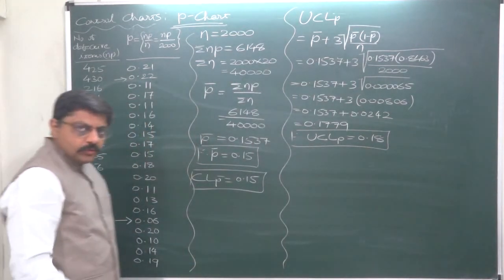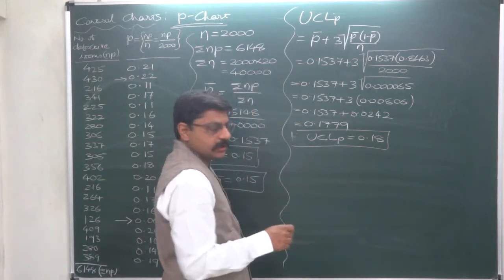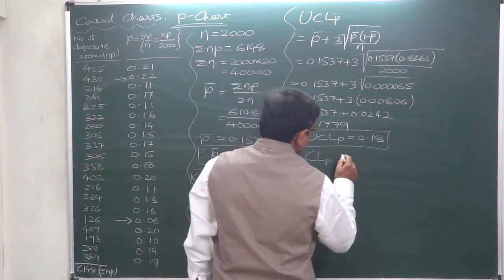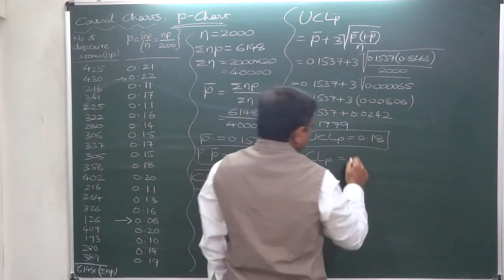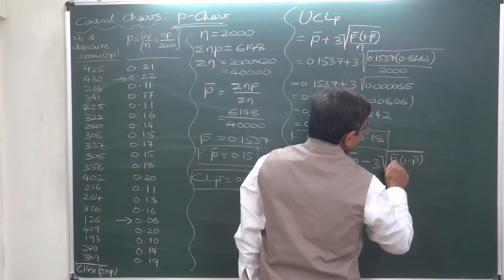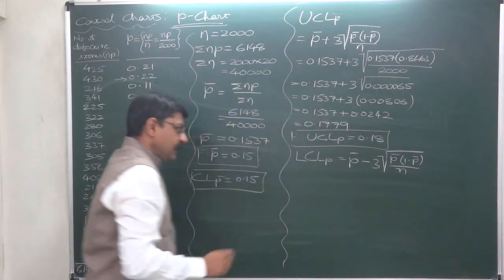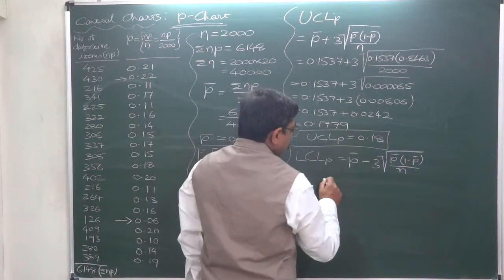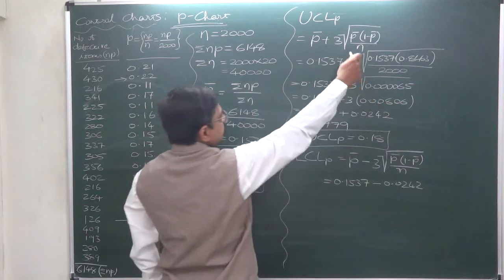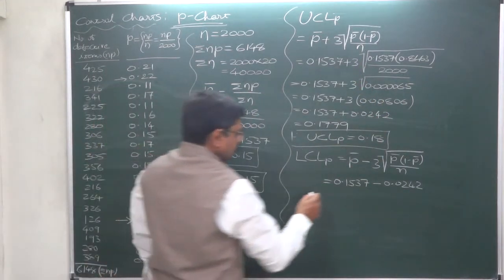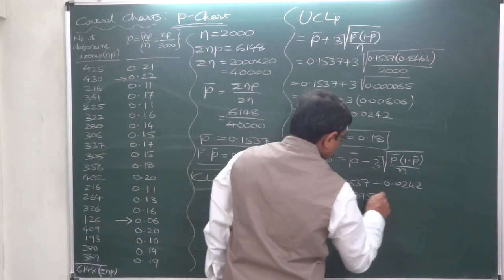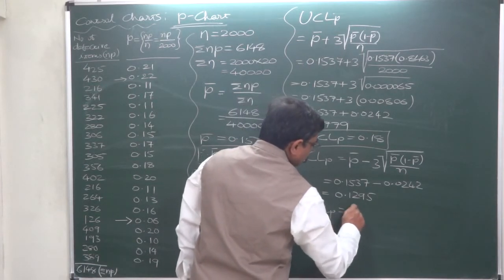In the same way, we need to calculate the lower control limit. Write the whole title lower control limit first and then only use the acronym LCL of P chart equals to, just sign will be minus. P bar minus 3 into P bar into 1 minus P bar whole divided by N, and square root of the entire fraction. So now we know that ultimately it will be 0.1537 minus 0.0242 because all these steps are common. Just sign is minus, so it comes to 0.1295 and rounded off lower control limit we shall take is 0.13.